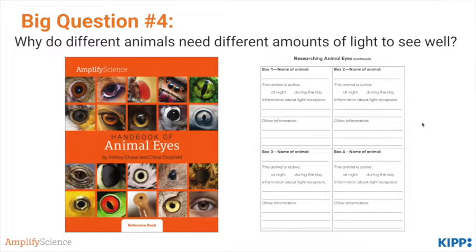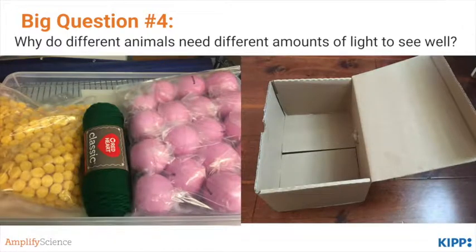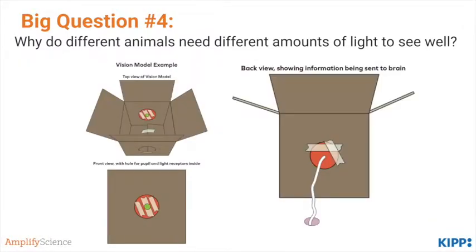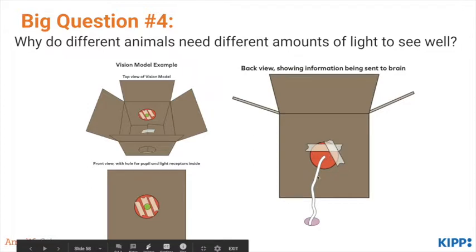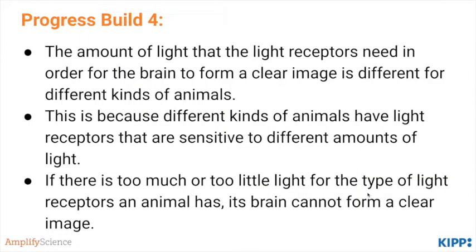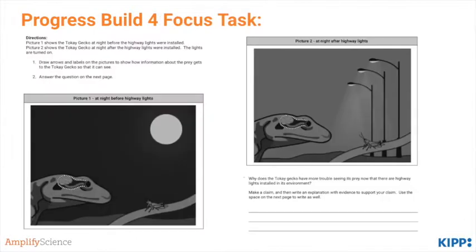Students return to the Handbook of Animal Eyes to do more comparisons of nocturnal and diurnal animals and learn more about light sensitivity. They also build an eye model using physical materials — the pupil represented as a hole in the box, receptors in the back of the box, and the optic nerve as yarn hanging out the back. By this point students should understand Progress Build 4. Students apply this understanding to return to and finally solve the problem of the tokay gecko in the Progress Build 4 Focus Task.